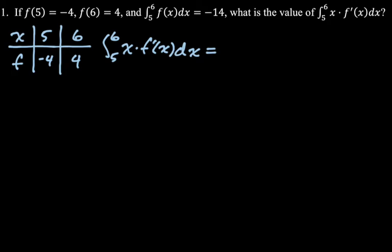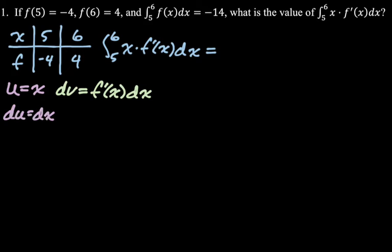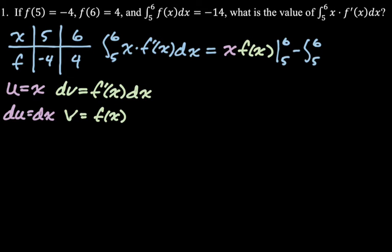So we're going from 5 to 6 of x f prime of x dx. You don't know anything about f double prime, so you definitely want to make u equal x and dv equal f prime of x. In general, you want to choose u so that the derivatives eventually go to 0 if you keep taking them. So u equals x, dv is f prime of x dx. Then du is dx, and v is f of x. Integration by parts gives uv minus the integral of v du, evaluated from 5 to 6, minus the integral from 5 to 6 of f of x dx.